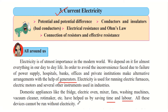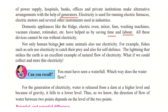Not only human beings but some animals also use electricity. For example, eels use electricity to catch their prey and also for self defense. The lightning that strikes the earth is an excellent example of the natural flow of electricity, and it contains tremendous amounts of electrical energy.